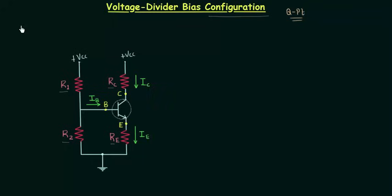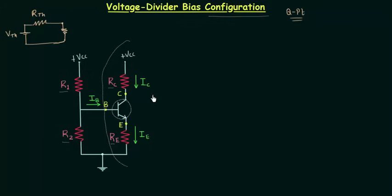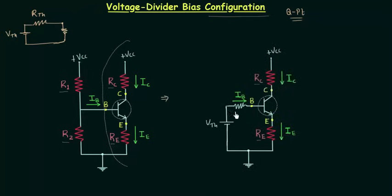In Thevenin's theorem, the equivalent circuit has the Thevenin's resistance, represented by RTH, and the Thevenin's voltage VTH, and then we have the load resistance. In the case of voltage divider configuration, the load is on this side. The equivalent model will look something like this: this is the Thevenin's voltage VTH and this is the Thevenin's resistance RTH. Once we have the value of RTH and VTH, we can easily calculate the collector current IC and the output voltage VCE.